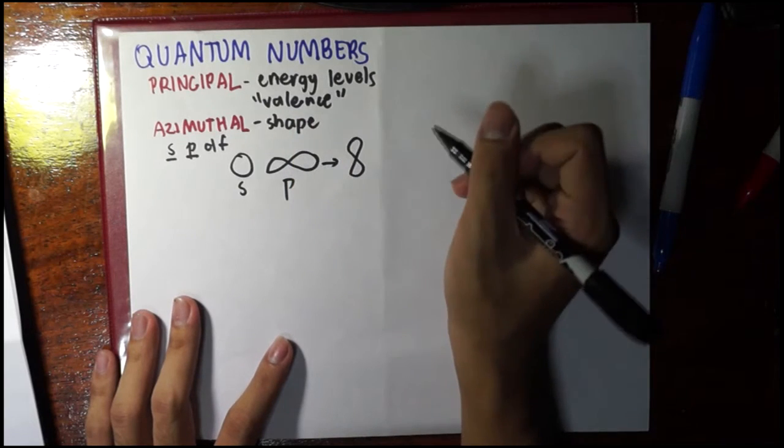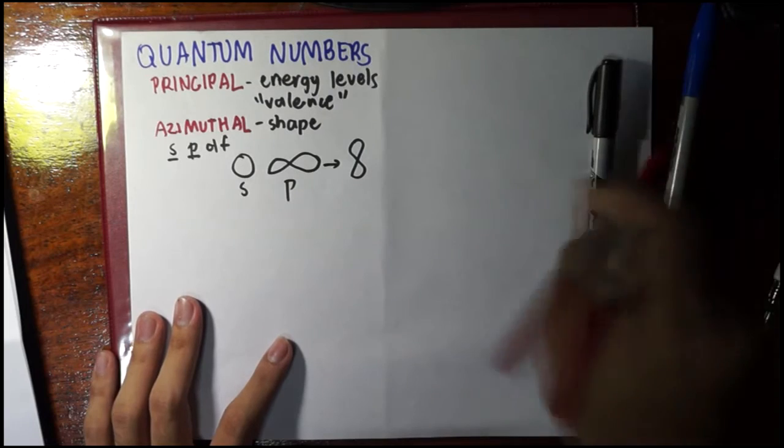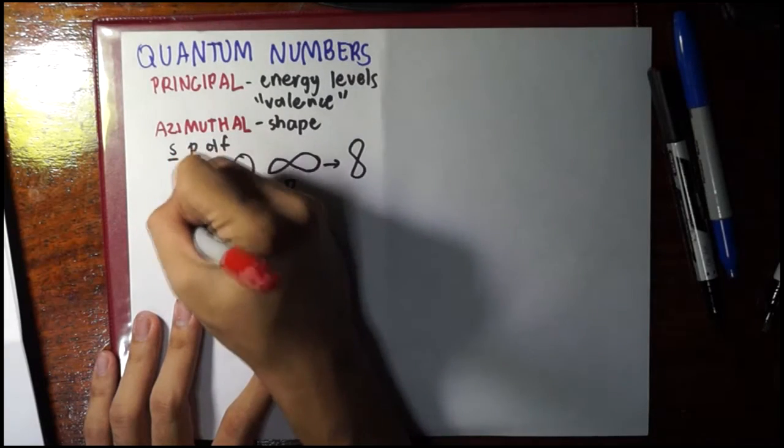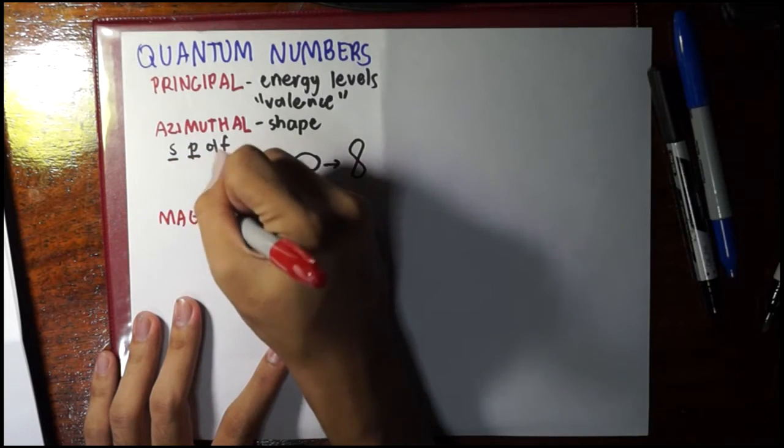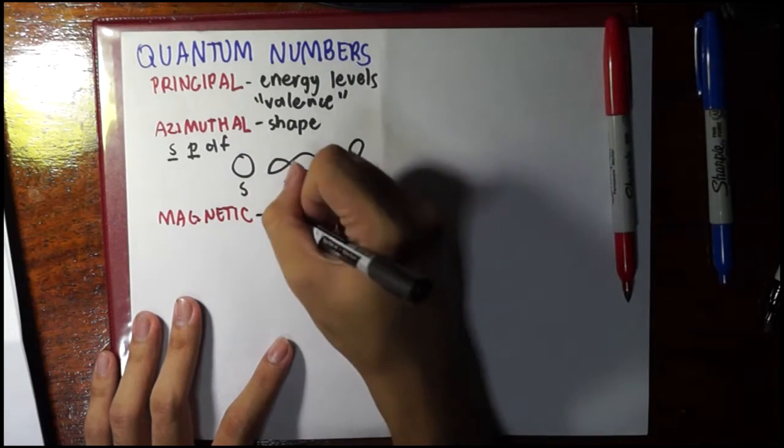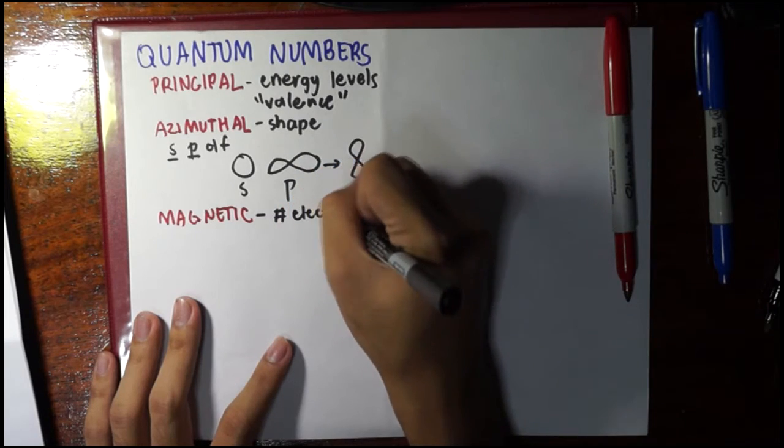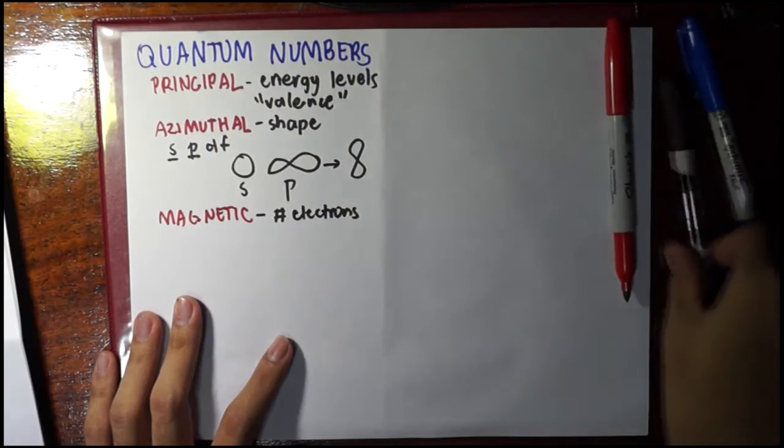This would make some kind of sense later on when we review the topic of pi and sigma bonds. The next would be the magnetic quantum number. This would give you the number of electrons or slots for electrons in a particular azimuthal quantum number.